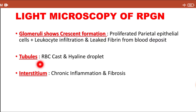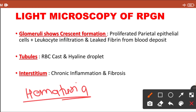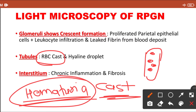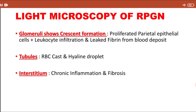The second change is seen in the tubules. In nephritic syndrome there is hematuria — red blood cells in the urine. These red blood cells along with precipitated protein can form a cast, a cylindrical structure formed in the convoluted tubule. If RBCs are present within it, it is known as an RBC cast. Hyaline droplets can also sometimes be seen. If this acute inflammation is not treated, it can convert to chronic inflammation and fibrosis in the interstitium.